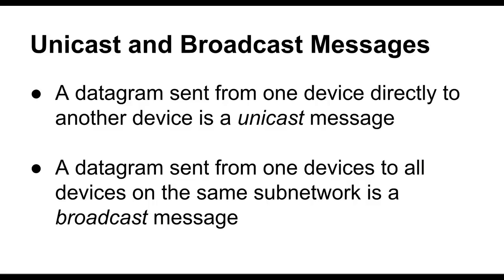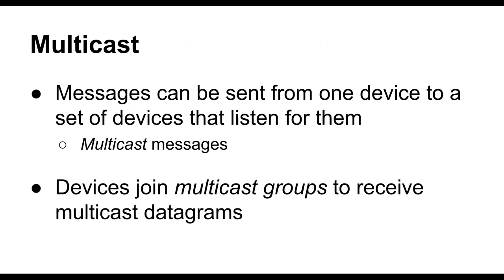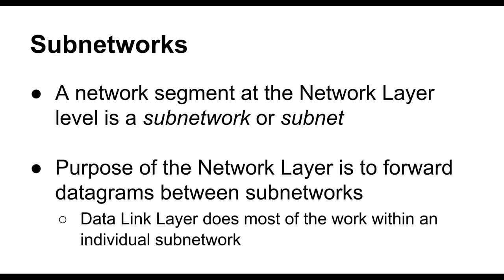Messages can come in several forms. Unicast messages are datagrams sent from one device directly to another device. A datagram can also be sent from one device to all devices on the same subnetwork — that's what we call a broadcast message. There's yet another type called multicast messaging, which allows messages to be sent from one device to a set of devices that listen for them. These devices have joined multicast groups, and a system can join one to receive multicast datagrams.